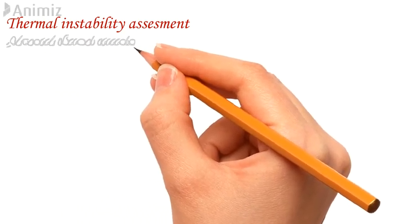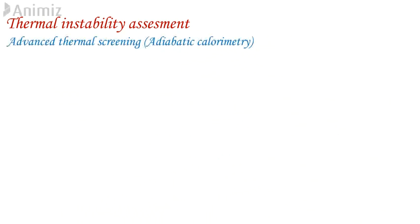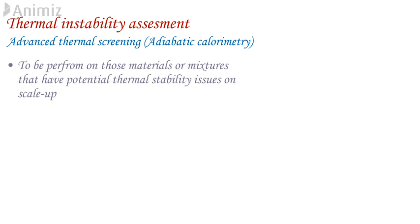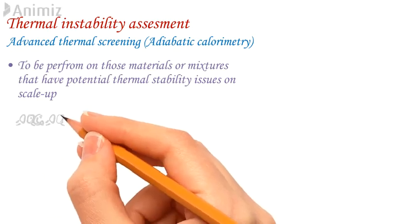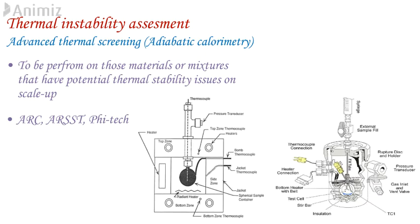Third, advanced thermal screening. Adiabatic calorimetry tests are performed as follow-up to the thermal screening test. Initially, thermal screening like DSC or TSU are performed for all material and process streams. These will highlight those materials or mixtures that have a potential thermal instability issue on the scale. Adiabatic tests should be performed on selected materials or mixtures to obtain a better assessment of the onset temperature on plant. Adiabatic calorimetry analysis like ARC, ARSST, Phytek can be used.